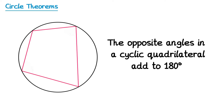For example, if we look at two angles opposite each other in a cyclic quadrilateral, and we knew that one was 86 degrees, we'd know the other must be 94 degrees, since 86 plus 94 makes 180. Similarly, the other pair of opposite angles must also add up to 180. If we knew the top one was 110, the bottom one must be 70, since 110 plus 70 is 180.